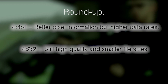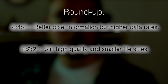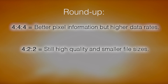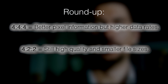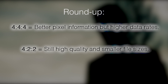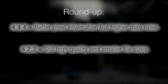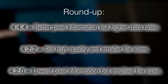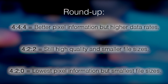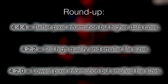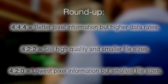4:2:2 is still considered a very high image quality, but you're going to have slightly smaller file sizes. It is actually broadcast quality and it's probably a lot more commonly used than 4:4:4. And then 4:2:0 is more for if you want to keep your file sizes down.